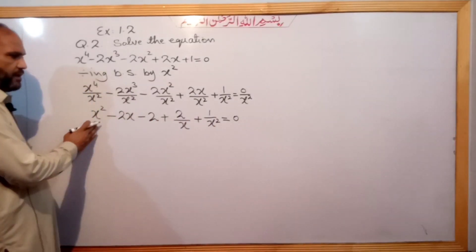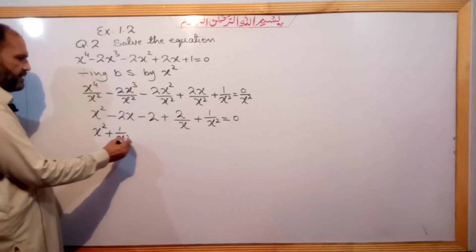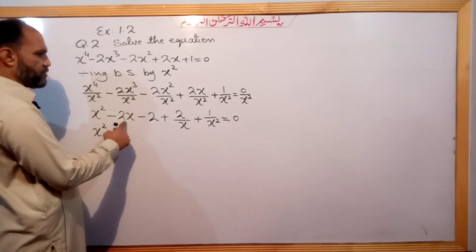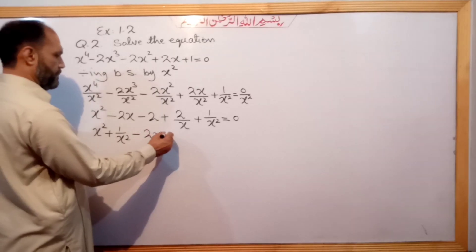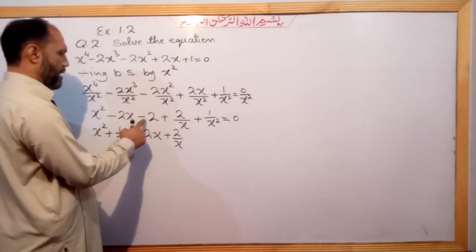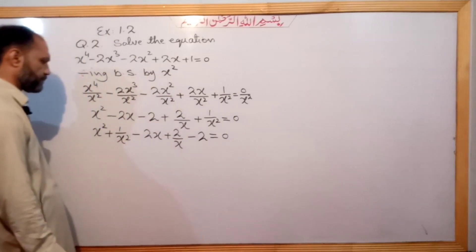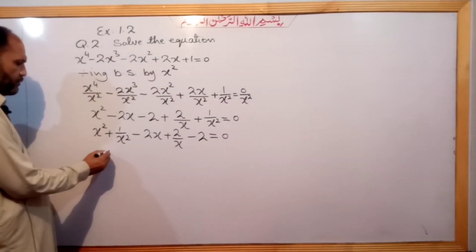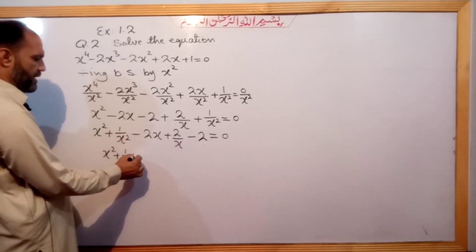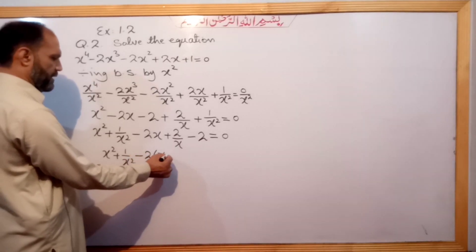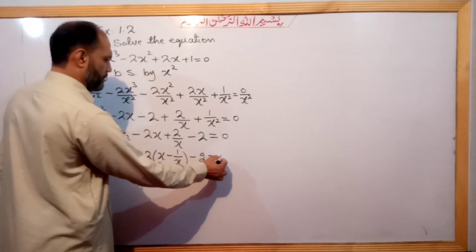Now we rearrange by grouping x² and 1/x² together, and x and 1/x terms together. So we get x² plus 1/x² minus 2x plus 2/x minus 2 equals 0. We can use the identity x² plus 1/x² combined with the term minus 2(x minus 1/x) minus 2 equals 0.